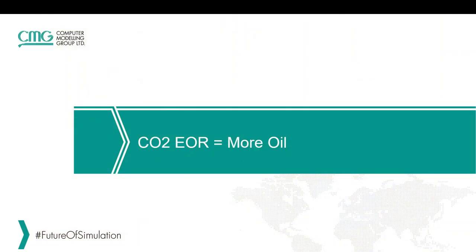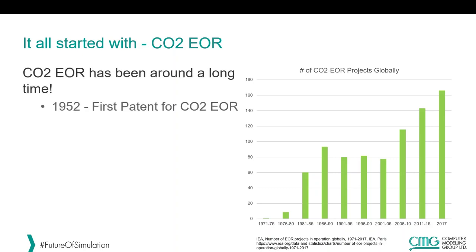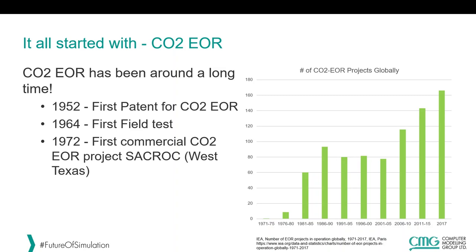Let's take a look at CO2. CO2 EOR started on the basis that it was a useful process resulting in more oil production. This IEA graph shows the number of projects globally over time — you can see it's built up consistently. The first patent for CO2 EOR was placed in 1952, the first field test in 1964, and the first commercial CO2 EOR project in West Texas in 1972, which is why the graph starts in the early 1970s. We've been learning about this process for about 50 years.